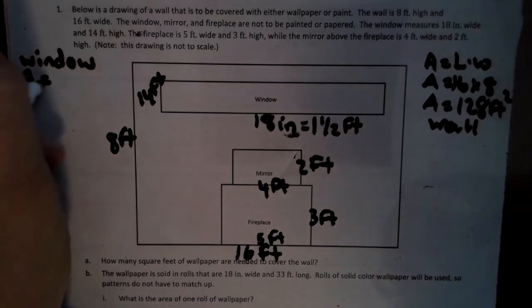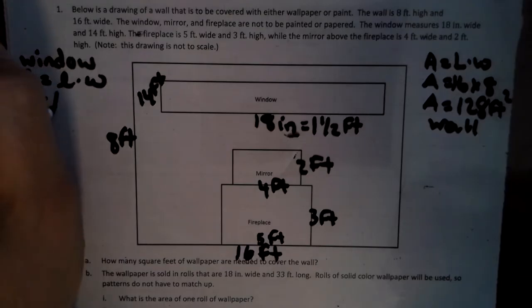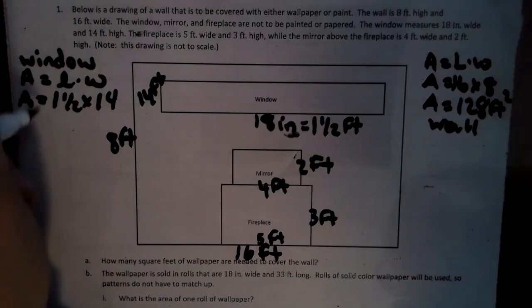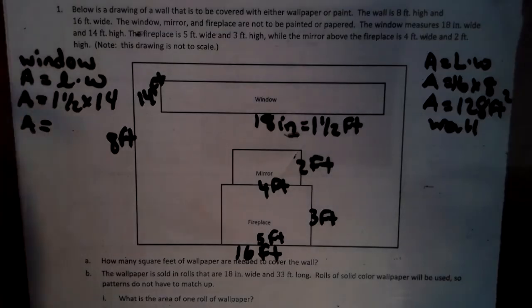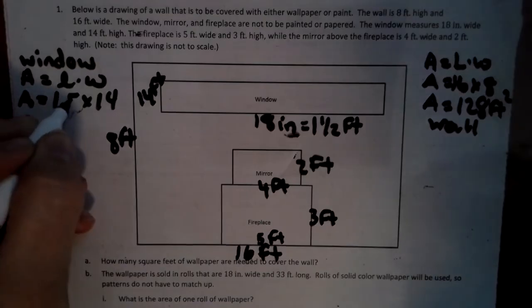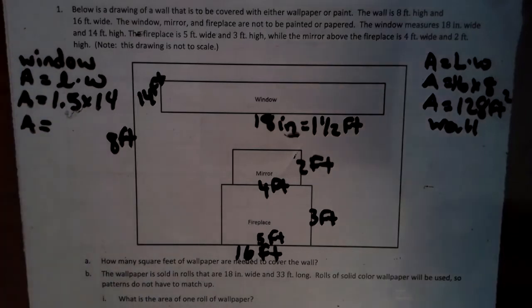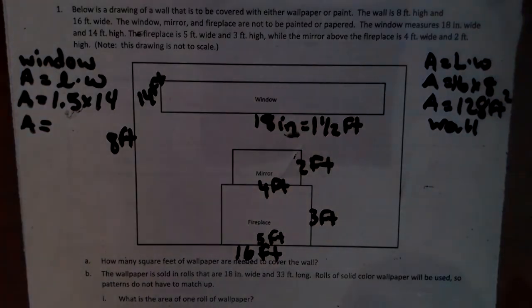So we're going to find area. Area equals length times width. Area equals 1 and a half times 14. Area equals... and see, this 1 and a half, I'm going to use 1.5 because 1 in 5 tenths, it's just a little bit easier than having to deal with anything. And a decimal is a lot easier to work with when you're working on paper.